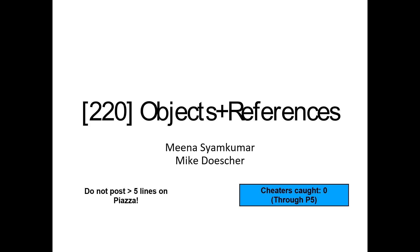Today we're going to be looking at objects and references — basically trying to understand what's going on inside Python with their memory model, how Python looks at variables and what the variables are referring to. We're also going to be introducing some new types. Some of these will give us more control and some will limit the amount of control we have, which lets us turn bugs into crashes instead of just getting the wrong answer. Crashing is always better than getting the wrong answer.